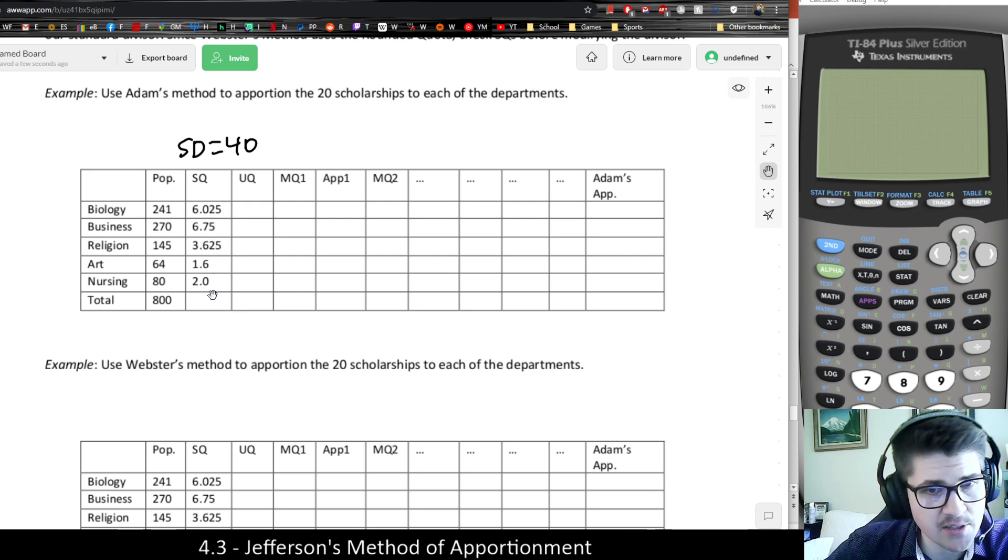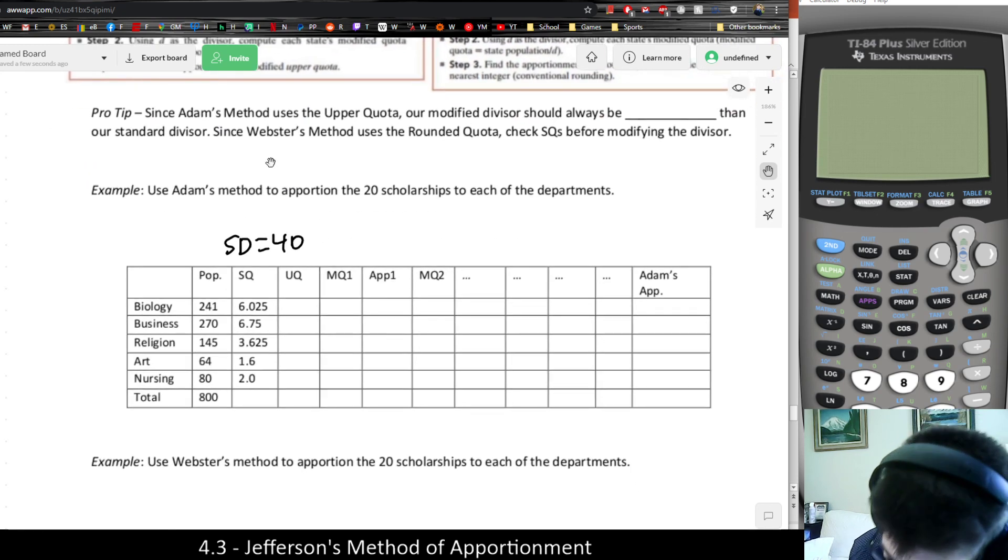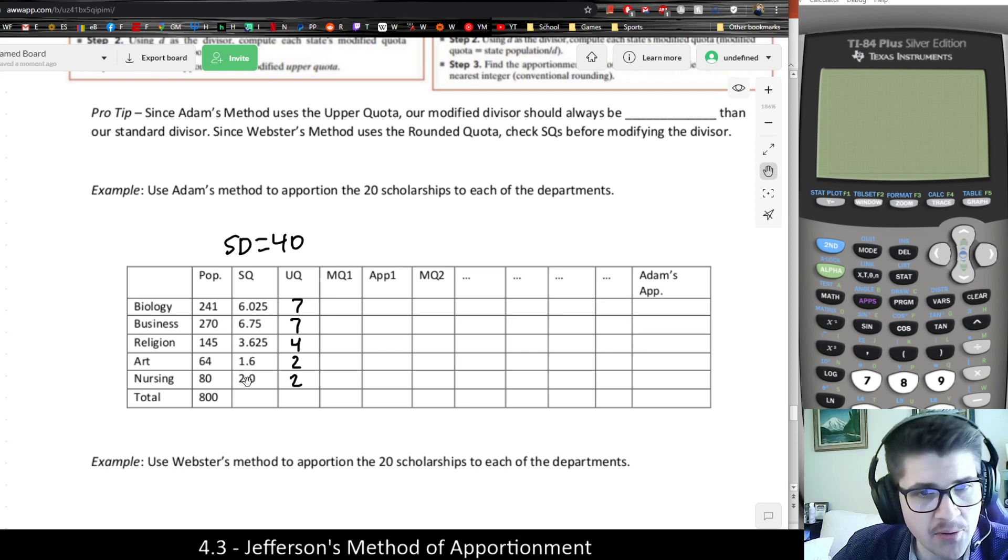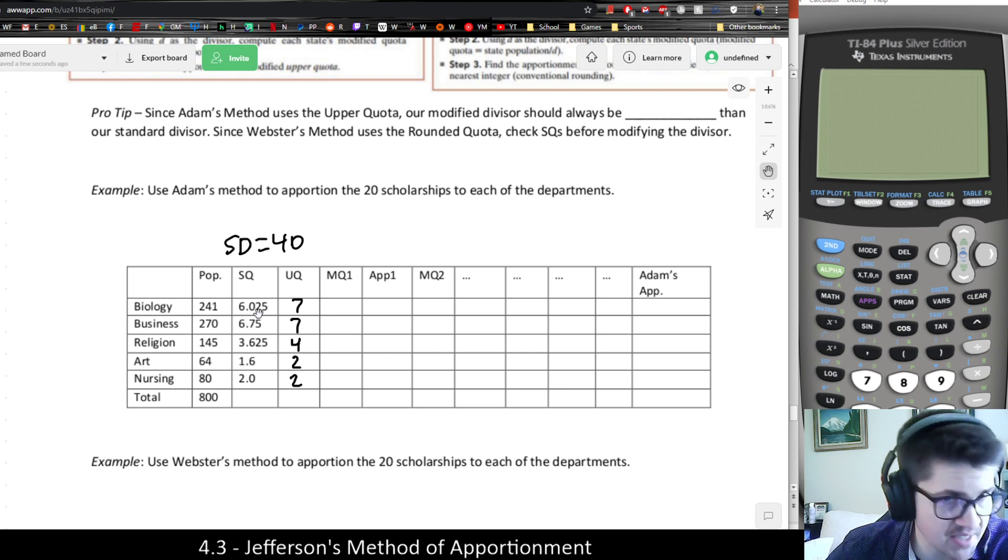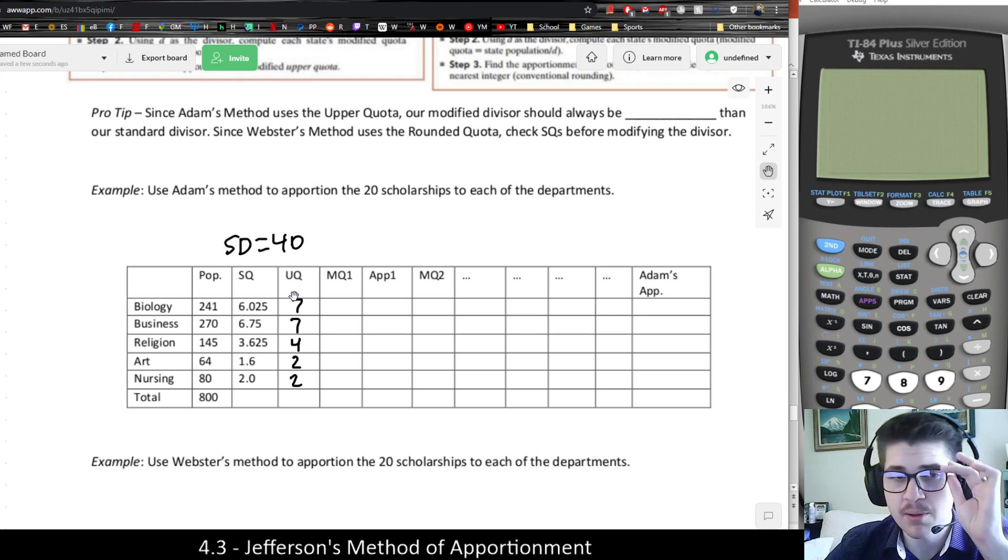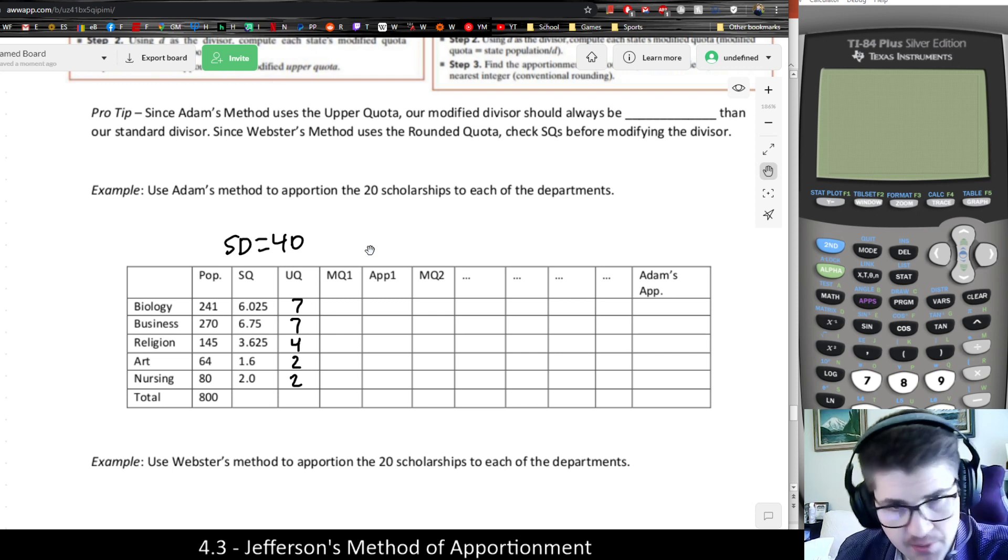In the case of Adam's method, we're going to be rounding up. So if we were checking the standard divisor, we'd round each of our numbers up. You're going to be using the upper quota. And remember that if it's already round, you don't need to add one to it. But something like 6.025 is not an acceptable number of seats. So that needs to be rounded. And regardless of what it is, it will be rounded up in Adam's method.